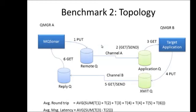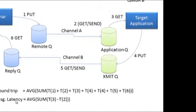This is the topology for benchmark number 2 — it's a lot more involved with a lot more steps. Step 1: put a message on a remote queue. Via transmission queue, the message ends up on the application queue. The application reads the message and puts the response back. The response travels over the channel to the reply queue and is then consumed by MQ Sonar. The same formula applies — we just have a lot more steps in computing the average round trip and average message latency.